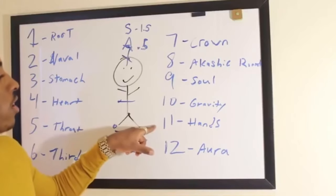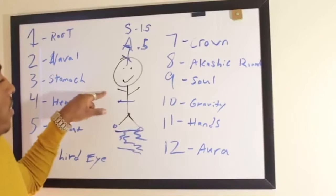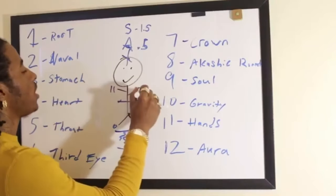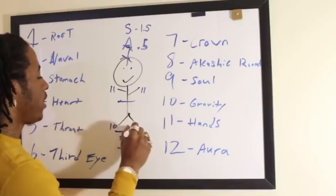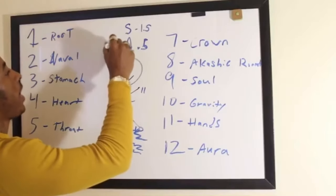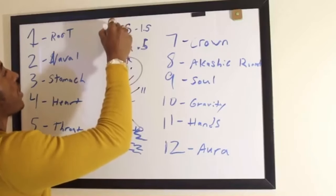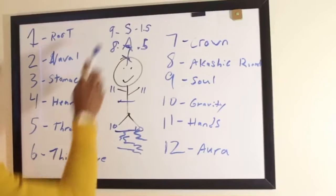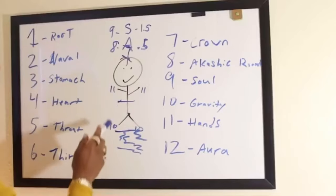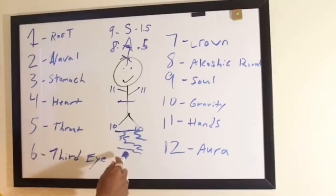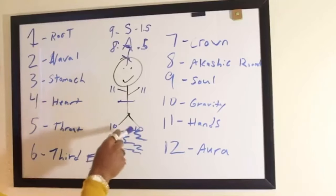The 11th chakra is the hands. We put little 11s there for hands and little 10s by the feet. I'm going to put an 8 by this A and a 9 by this S so you know: your 8th chakra is your Akashic Records, your 9th chakra is your soul, your 10th chakras are your feet aka gravity, and your 11th chakras are your hands.